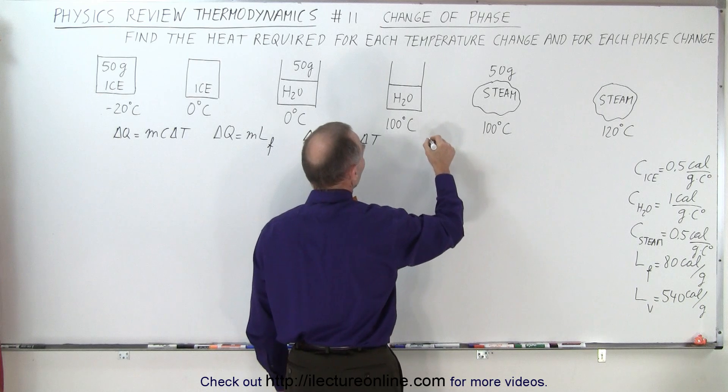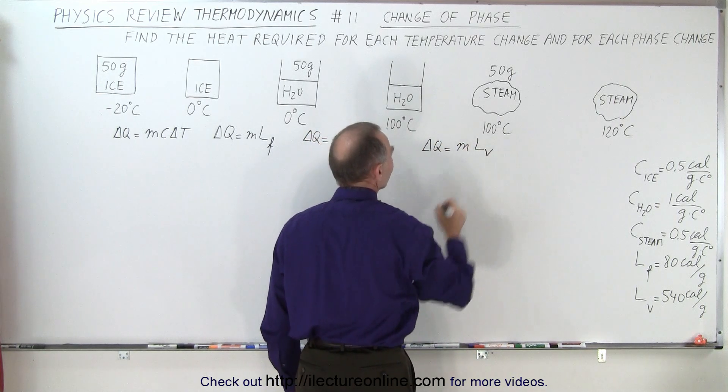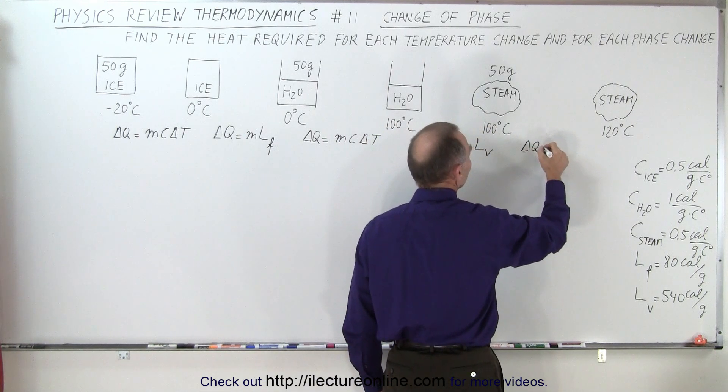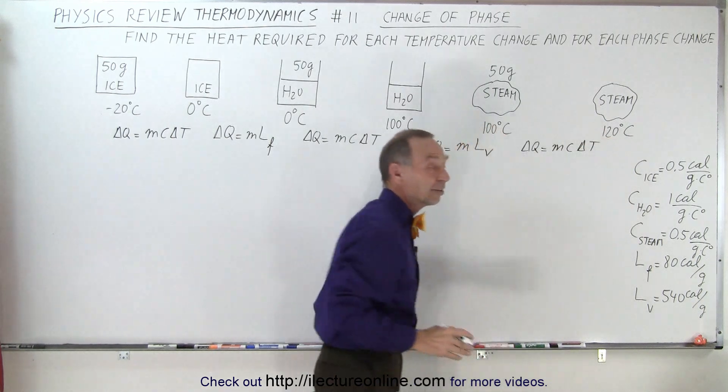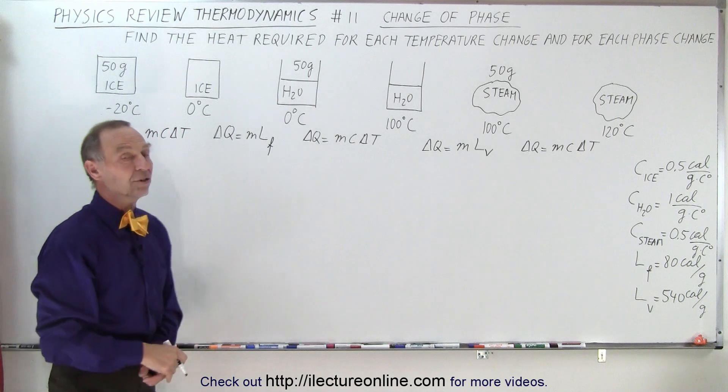Here we have another phase change, so we have delta Q is equal to the mass times the latent heat of vaporization, and here we have a temperature change again, so we have delta Q is equal to M C delta T. That is how we're going to find the heat required in each of these changes.